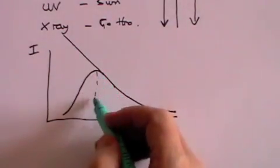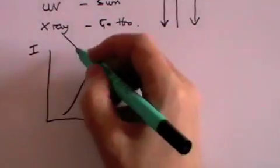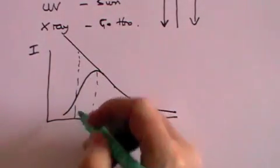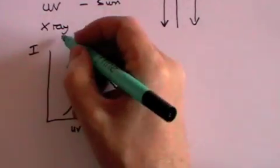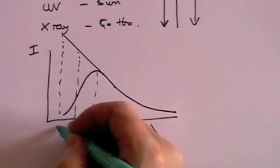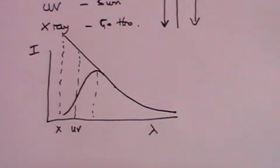And since this was kind of the visible light region, then here in the ultraviolet region, or here in the X-ray region, the intensity ought to be even greater.